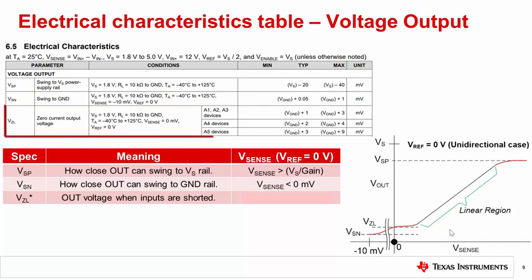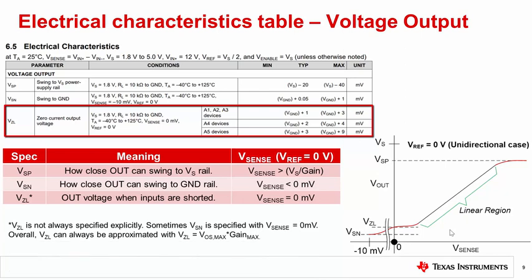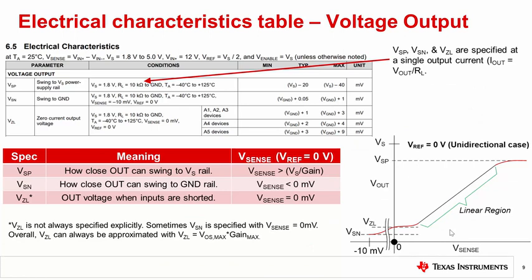The third specification is the zero current output voltage, or VZL. And it can be helpful in understanding where the output can start when sense current is zero amps, or essentially when the inputs are shorted. Note that the VZL is not always specified, and that sometimes VSN is specified with VSense equal to zero millivolts. So, be sure to always check the testing conditions. If needed, VZL can be approximated by calculating the worst case offset and multiplying it with the worst case gain. Lastly, note that each specification shows a 10 kOhm load resistor to ground, which means each specification is tested at a single output current.